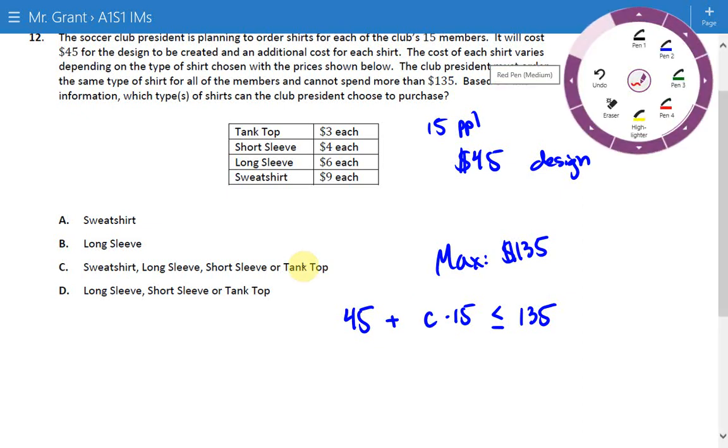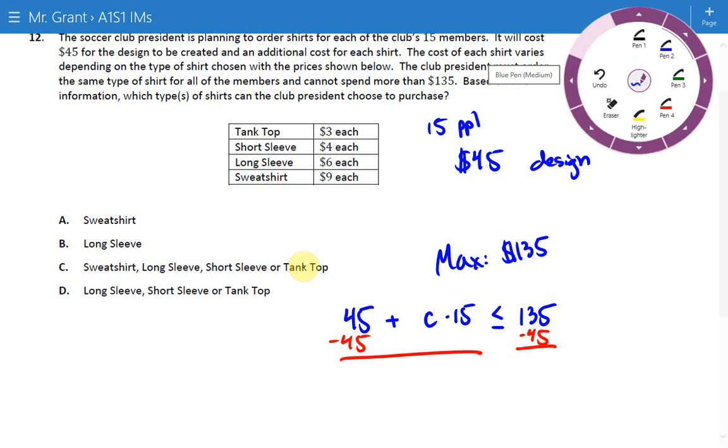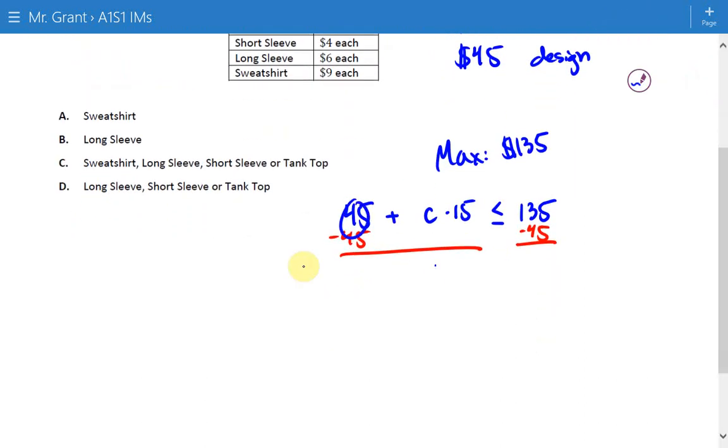This is just an inequality we can solve. We have 45 that's adding to C, and we have 15 that's multiplying. SADMEP says undo the 45 first, right? So if I subtract 45 off of each side, let's see what we end up with. I think this will give us 15 times C is less than or equal to, that's looking like 90, I think. 9 and 4 is, yeah, that looks good.